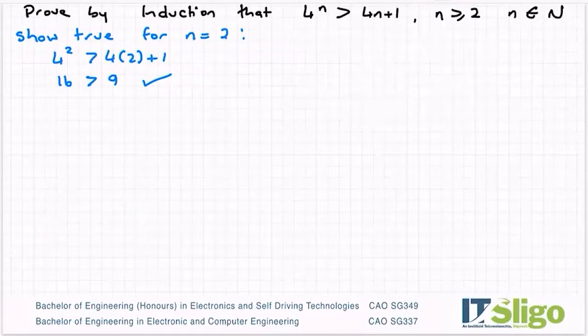Okay, so the next step: assume true for n equals k. So I'll have 4 to the power of k is greater than 4k plus 1. Nothing I can do really to simplify that.